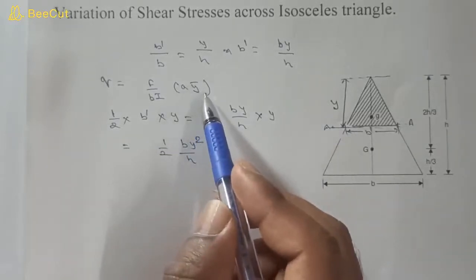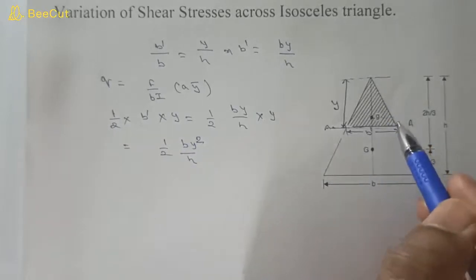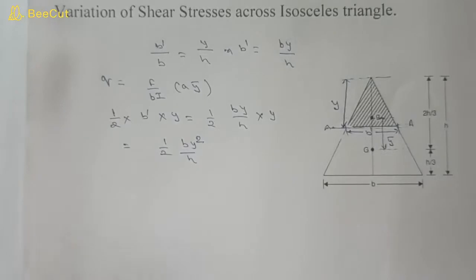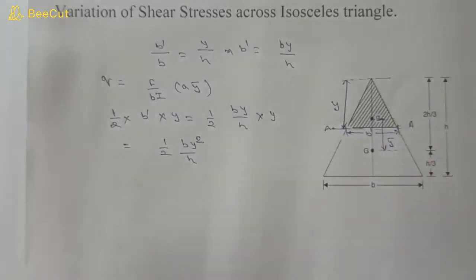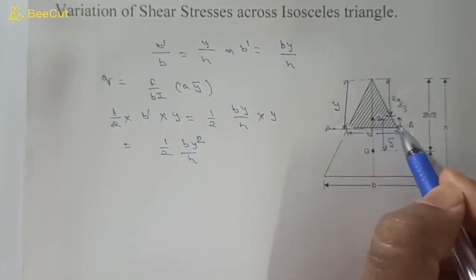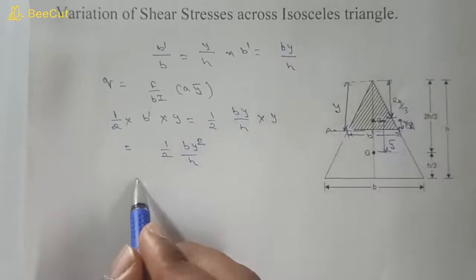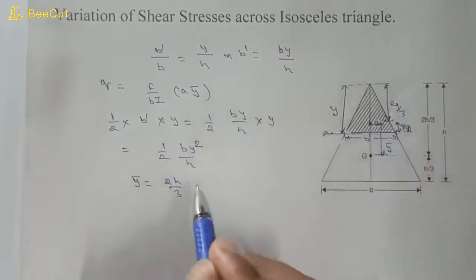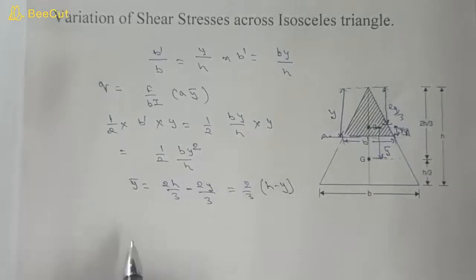Now we need to find y_bar, the distance from the centroid of the upper triangular portion to the centroid of the main triangle. The centroid of the upper triangle is at 2y/3 from the top, so from the base the distance is 2h/3. Therefore y_bar = 2h/3 − 2y/3 = (2/3)(h − y).